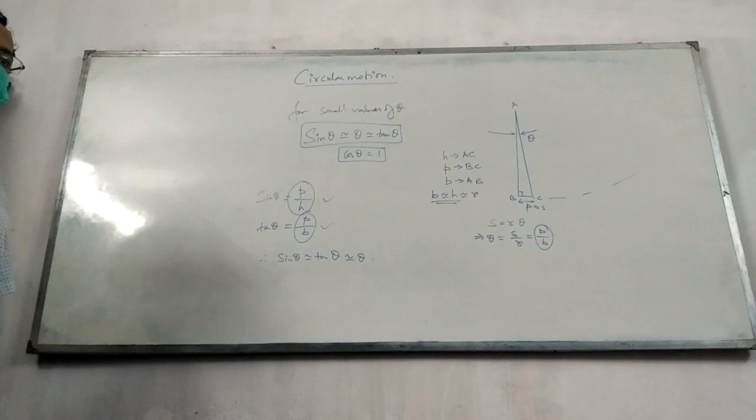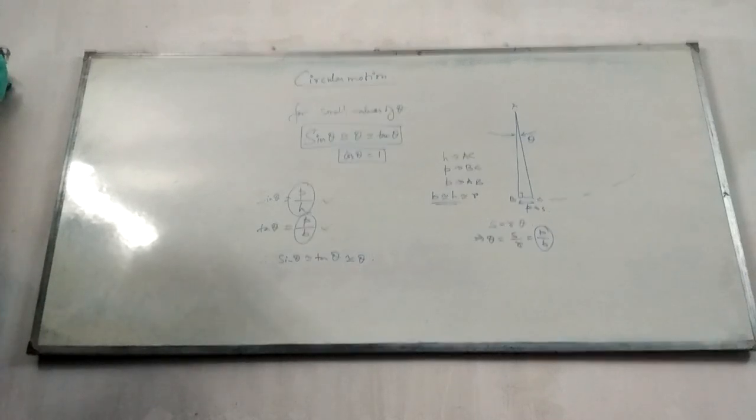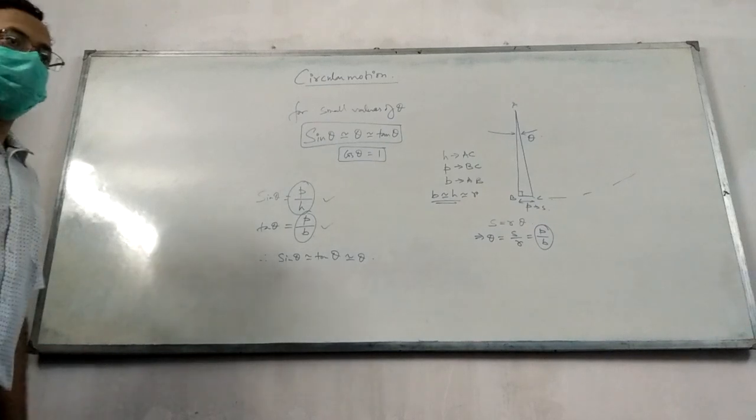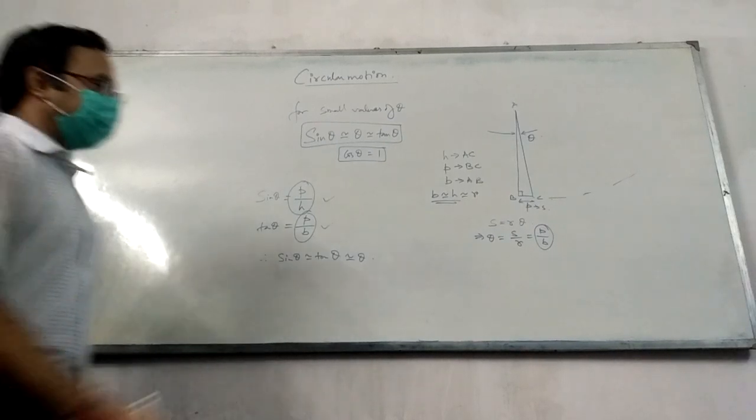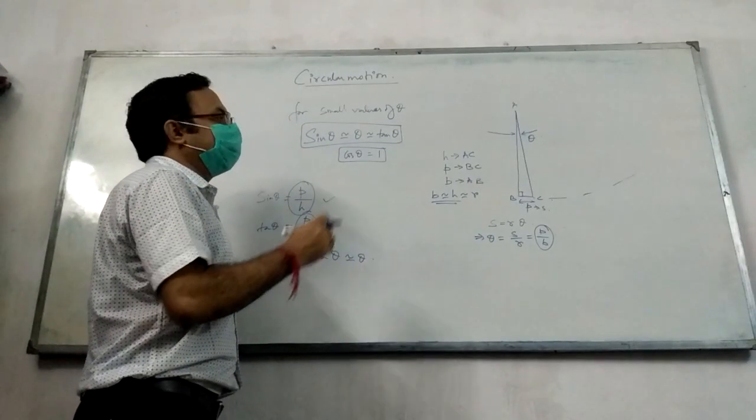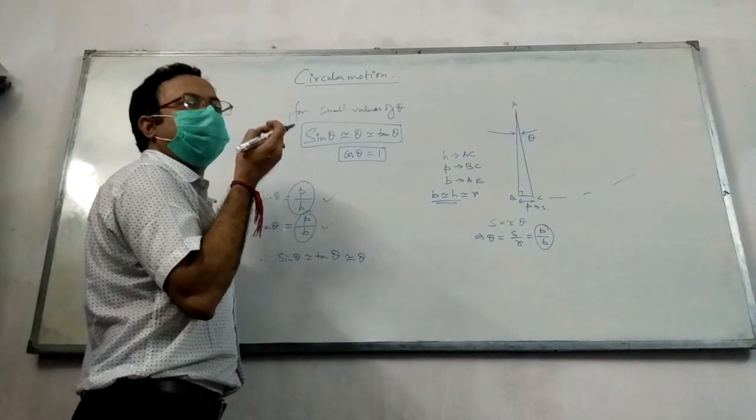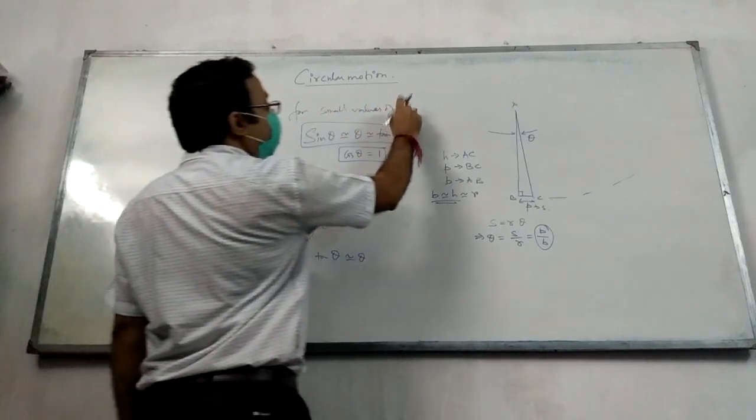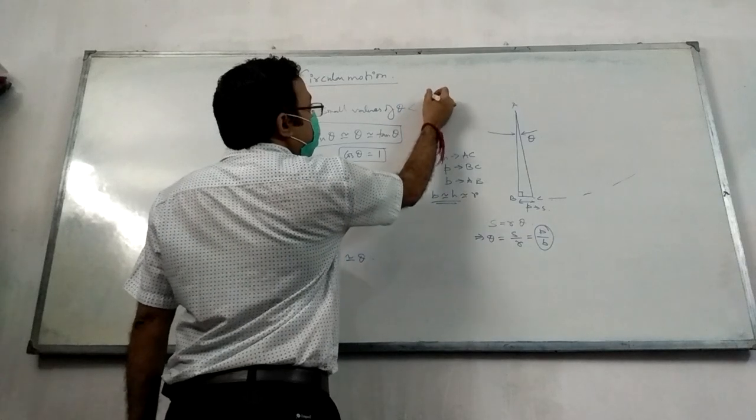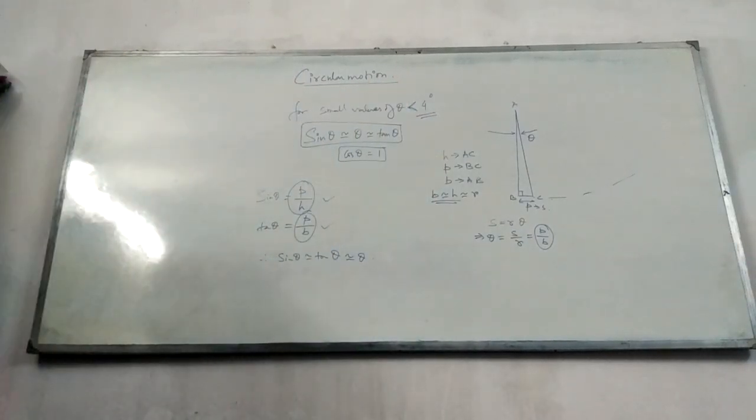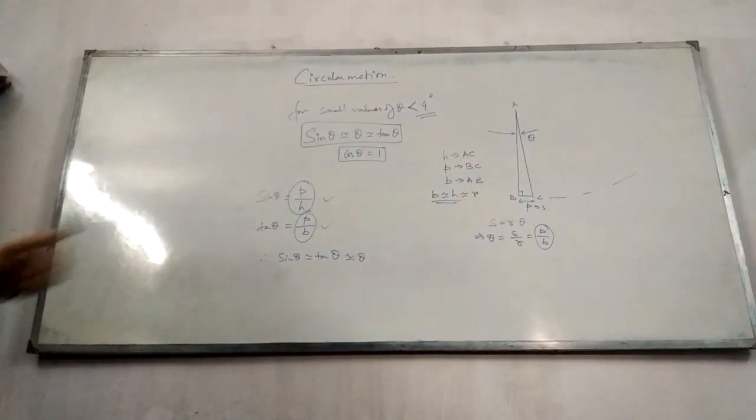So that is nearly equal to theta. Arc to radius is equal to theta, right. It is nearly equal, nearly equal to theta, exactly equal to theta. The theta is less than 4 degrees. If it is less than 4 degrees, then the concept is applicable.